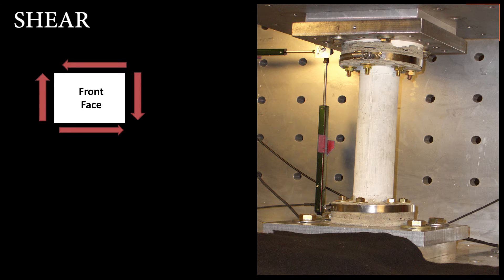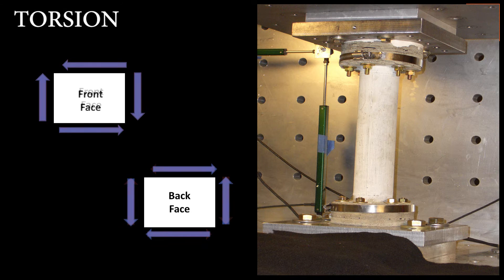Unlike the response due to shear loading, torsion produces shear stresses in opposing directions on the opposite sides of a member.